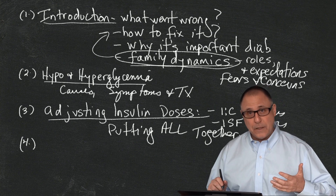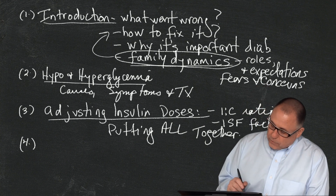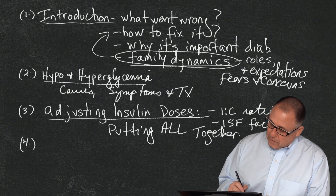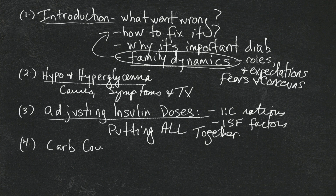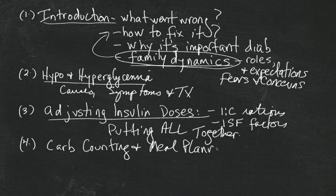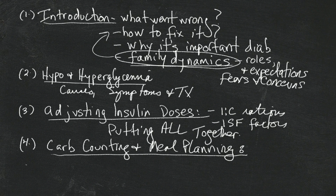The goal is to make you as independent as possible. After we talk about adjusting insulin doses, we will talk about carb counting — it's important — and meal planning. It's way easier than it used to be in the past because we're not using exchange diets. Things are much more flexible.